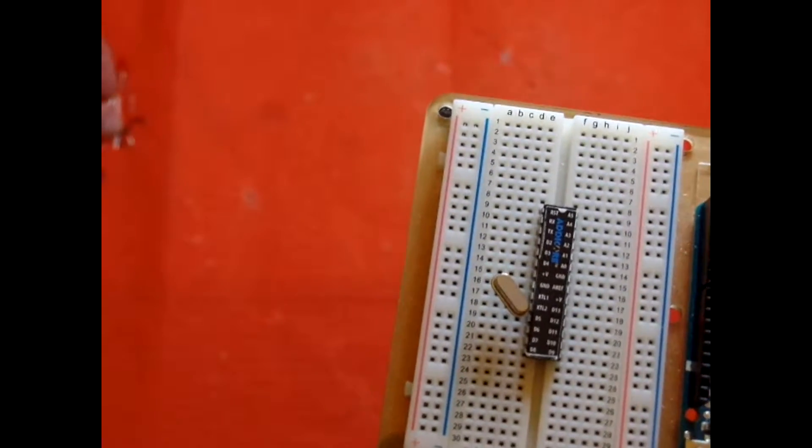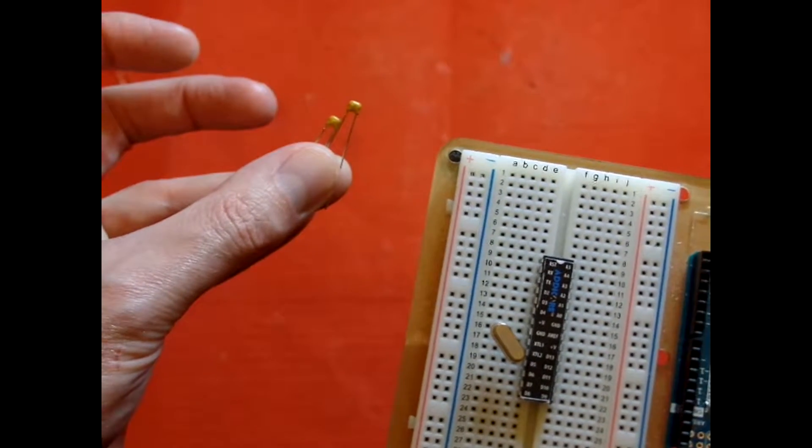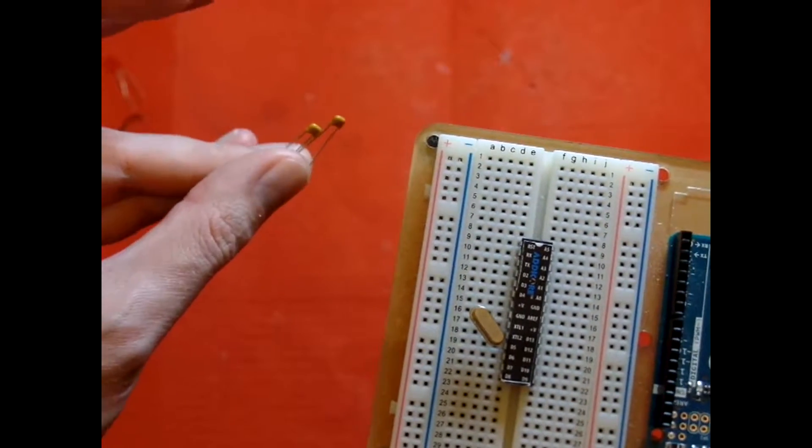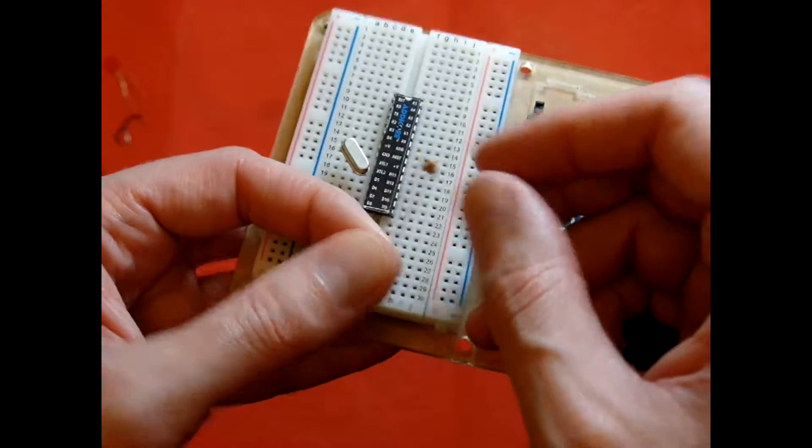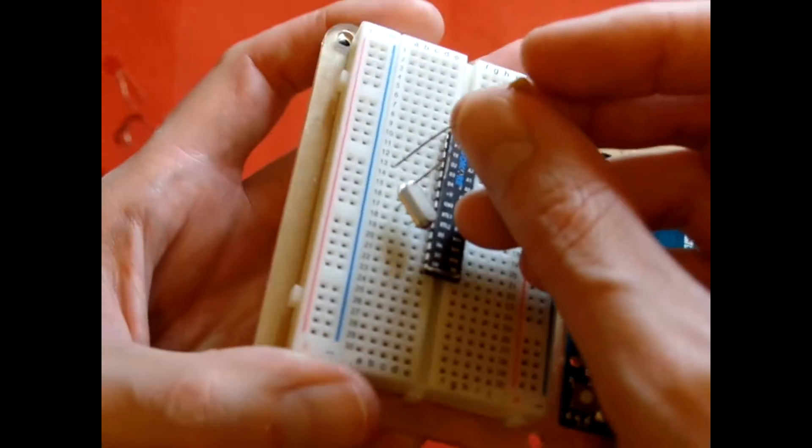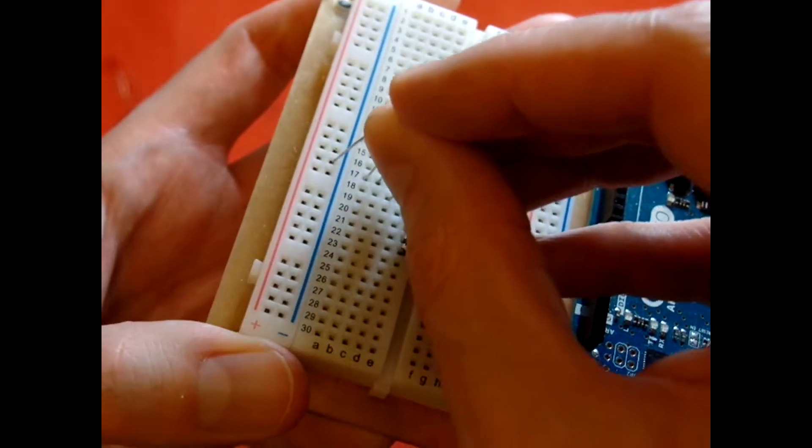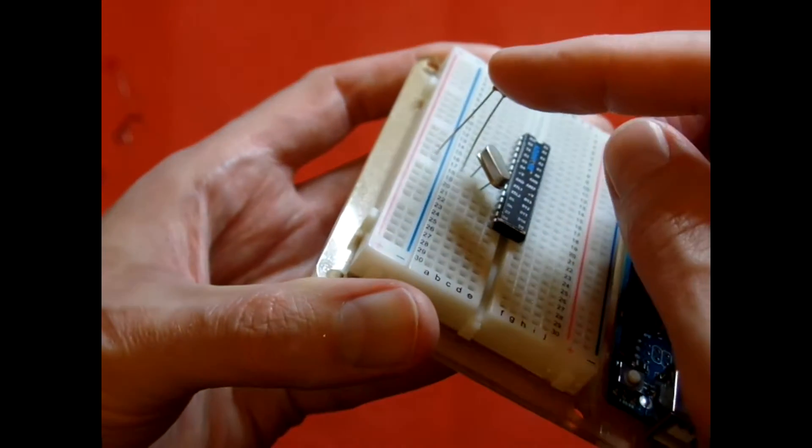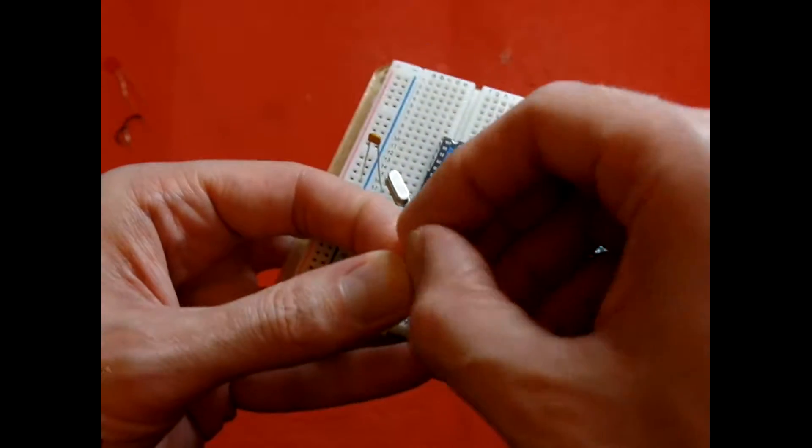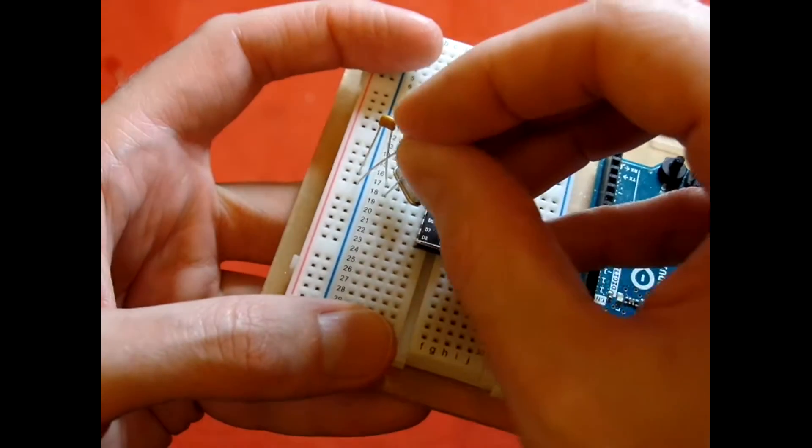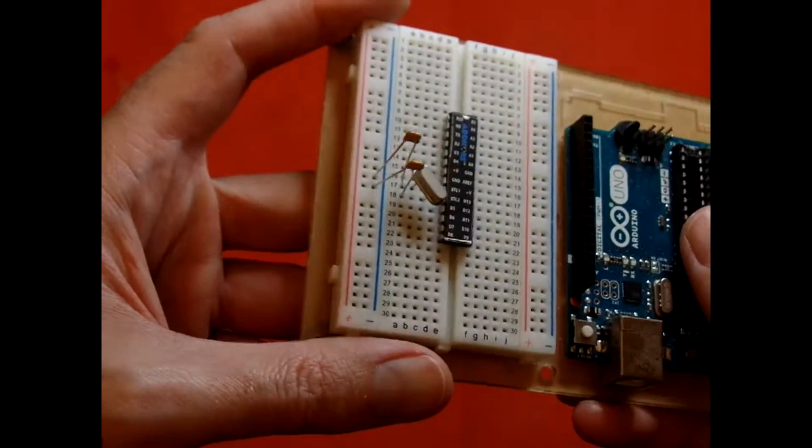And then we're also going to need two 22 microfarad capacitors. These are ceramic capacitors. We're also going to want to connect these to pins 9 and 10 and then connect them also to ground. So one side pin goes into pin 9 and then to ground. And also with the other one, you want to connect it to pin 10 and then also to ground.